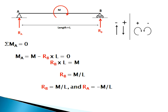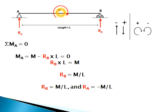For a simply supported beam, both end moments are zero. Before solving, let's establish sign convention: clockwise moments are taken as positive and anticlockwise moments as negative.